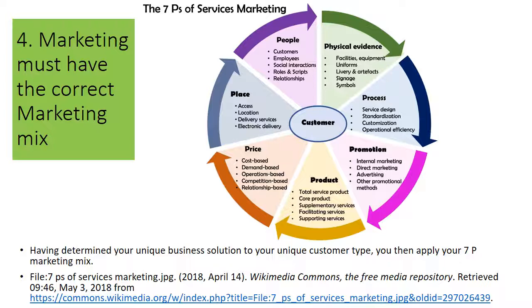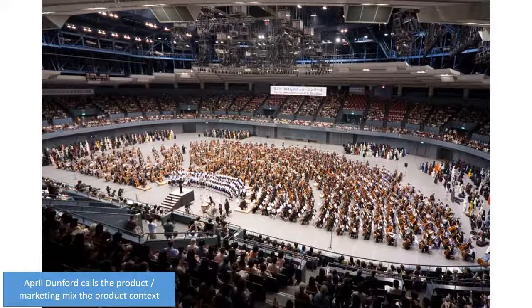In e-marketing, you must still have your correct marketing mixture. This seven-piece services marketing mixture is for the services supplier and not necessarily a goods supplier — people, physical evidence, promotion. You must remember that your marketing must still have the correct marketing mix. April Dunford has a lot of very good videos online. She calls it product context, and the marketing mix means everything must be in balance. You will find out what the balance must be through trial and error sometimes.